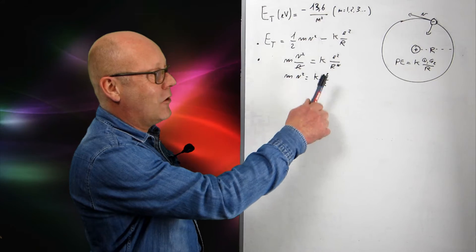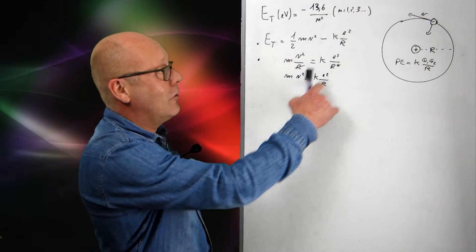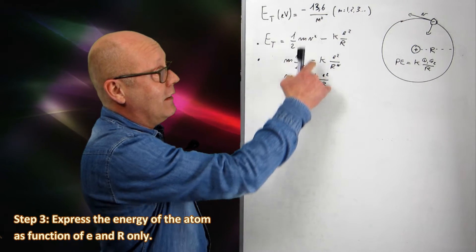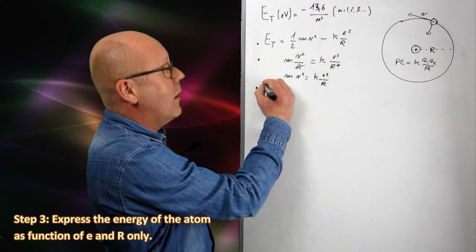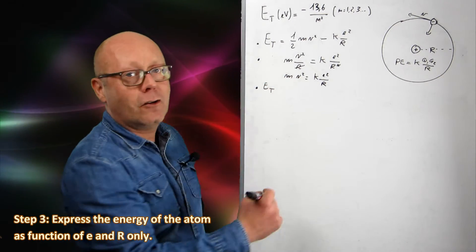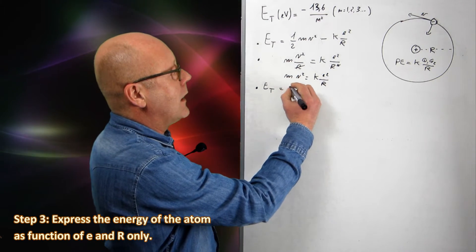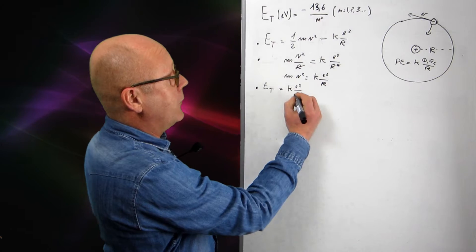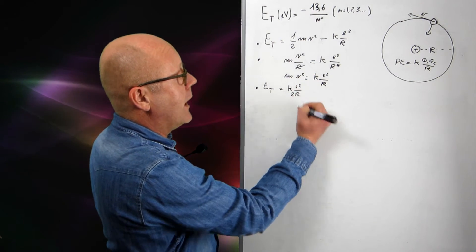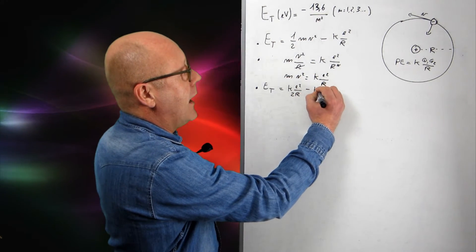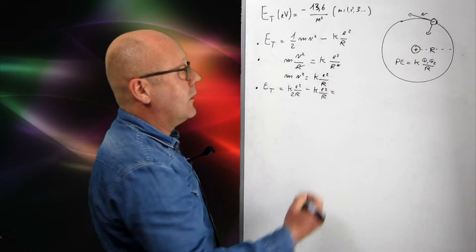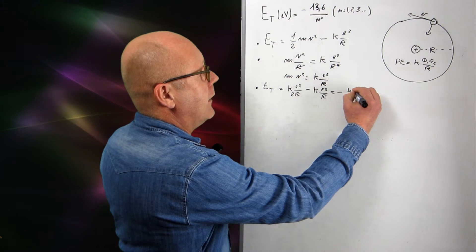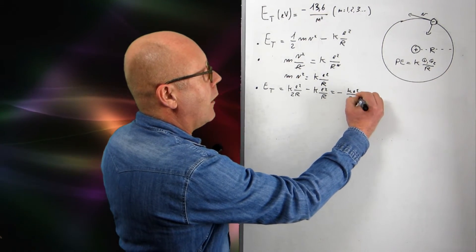Now that's pretty interesting, because look at how this looks like. It looks very similar to that. So I'm going to actually put this into there, and get a new expression, much more sympathetic of my total energy. Giving me k e squared on r. Divide by two, because I've got a half here that I mustn't forget. Minus k e squared on r. So that gives me the expression for the total energy minus k e squared on 2r.